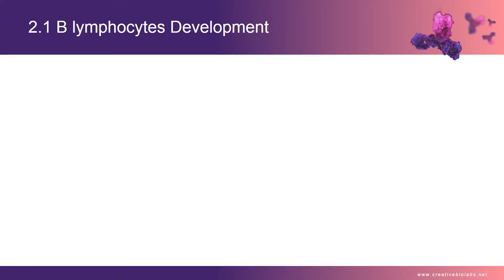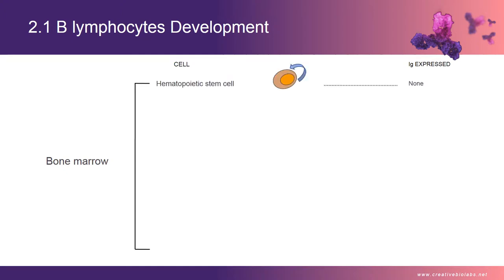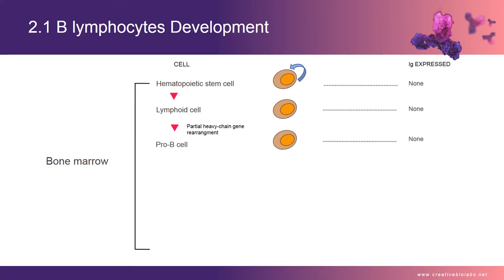B-cells develop from hematopoietic stem cells (HSCs) that originate from bone marrow. HSCs first differentiate into multipotent progenitor (MPP) cells, then common lymphoid progenitor (CLP) cells. From here, their development into B-cells occurs in several stages. The cells undergo D-J joining on the H-chain chromosome to become early pro-B cells. Joining of a V-segment to the D-JH completes the late pro-B cell stage. Pro-B cells become pre-B cells when they express membrane mu-chains with surrogate light chains in the pre-B receptor.